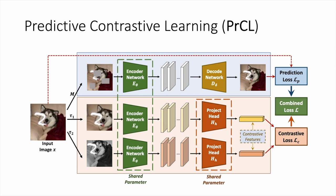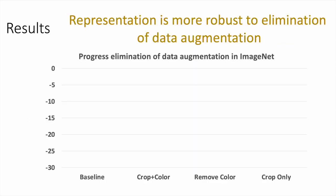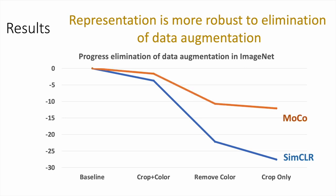Remember this graph where we eliminated these data augmentations in ImageNet, and we saw that SimCLR performance drops by 30%. MoCo and BYOL performance drops by about 15%. PRCL, on the other hand, achieves good performance even with Crop and Resize as the only augmentation.